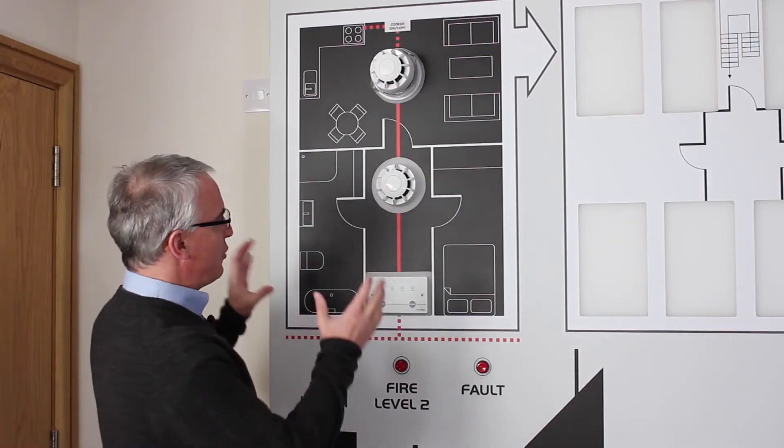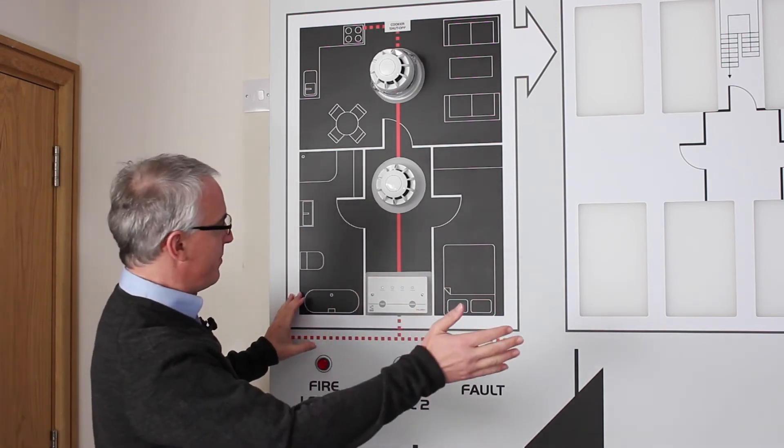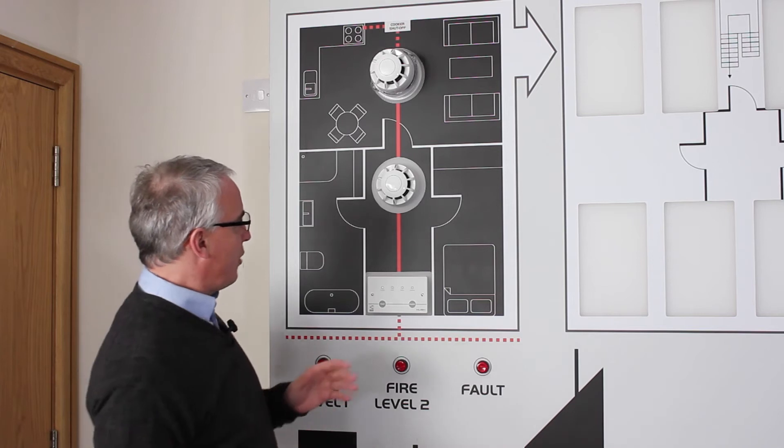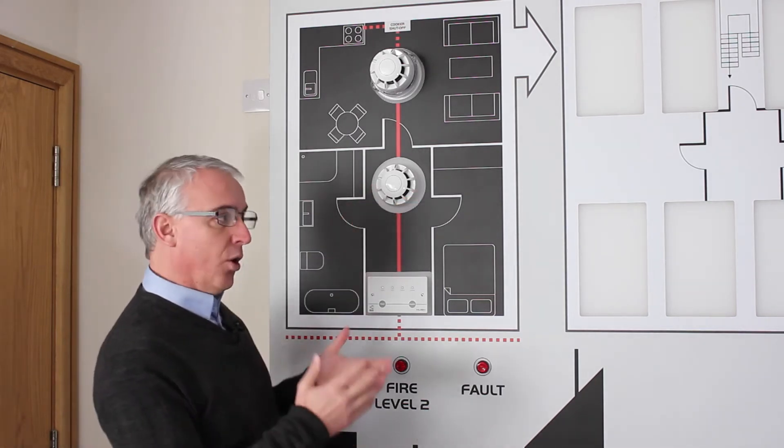Okay, so the individual dwelling, as we have said, is connected to the landlord monitoring panel. Now should a fault occur in the dwelling, maybe because somebody's removed a detector head or the wiring has been damaged, the fault when it happens will flag at the Hush controller.